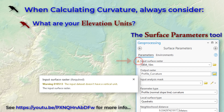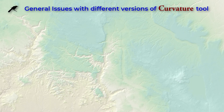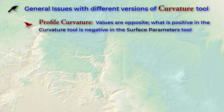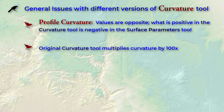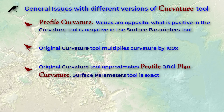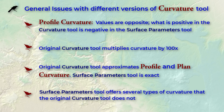There are a few more differences between the tools. First, the original curvature tool and the surface parameters tool calculate profile curvature very differently: the original curvature tool produces positive profile curvature values in concave areas where water would slow down, while the newer surface parameters tool produces positive profile values in convex areas where water would speed up. Second, the original curvature tool multiplies the final curvature values by 100, while the surface parameters tool does not. Third, the surface parameters tool calculates true profile and plan curvature, while the curvature tool only approximates these values. Finally, the surface parameters tool offers several additional types of curvature that the curvature tool does not.